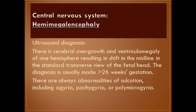Hemimegalencephaly — ultrasound diagnosis: there is cerebral overgrowth and ventriculomegaly of one hemisphere, resulting in a shift in the midline in the standard transverse view of the fetal head. The diagnosis is usually made after 26 weeks gestation. There are always abnormalities of sulcation, including agyria, pachygyria, or polymicrogyria.